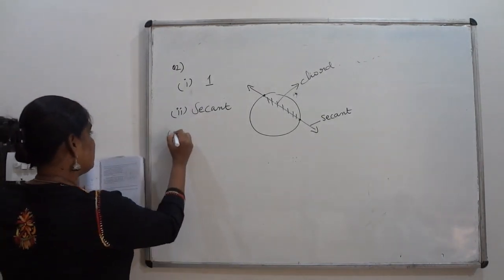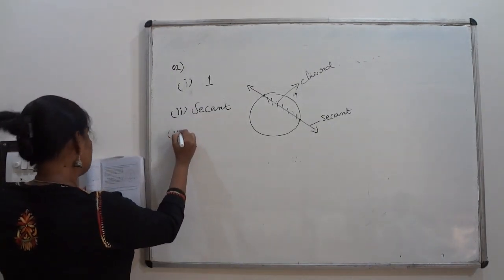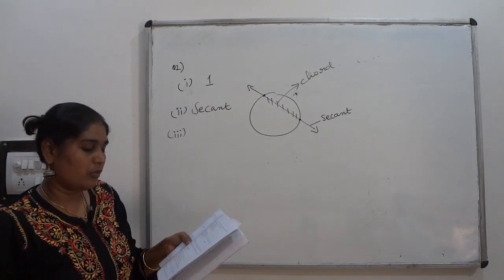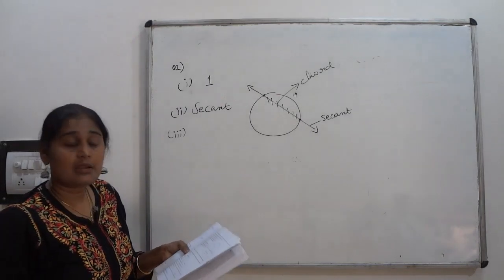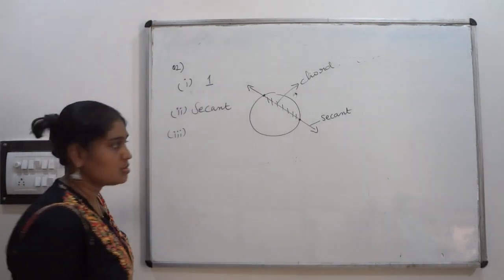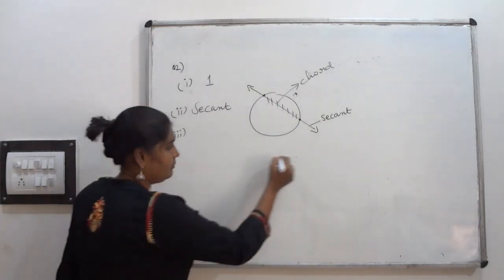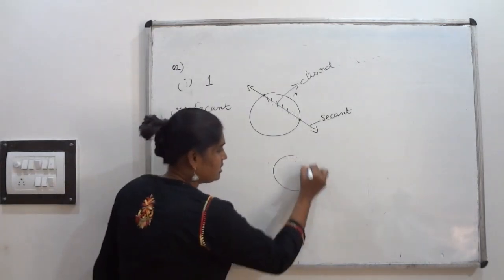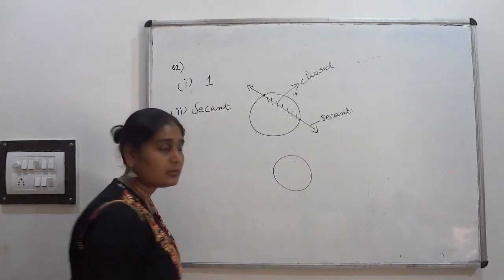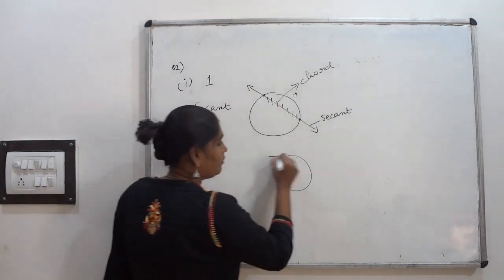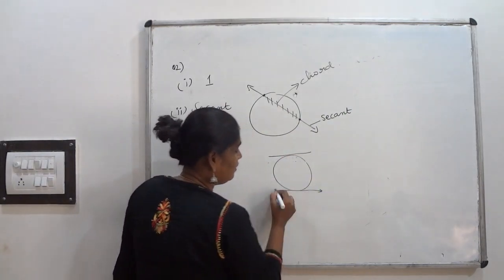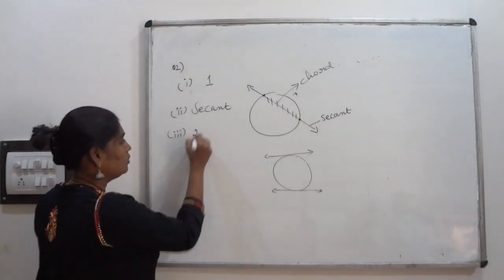Third part of question 2: A circle can have how many parallel tangents at the most? A circle can have only two parallel tangents at the most.